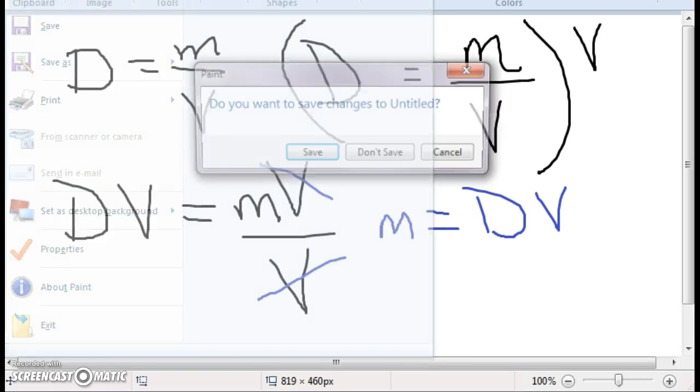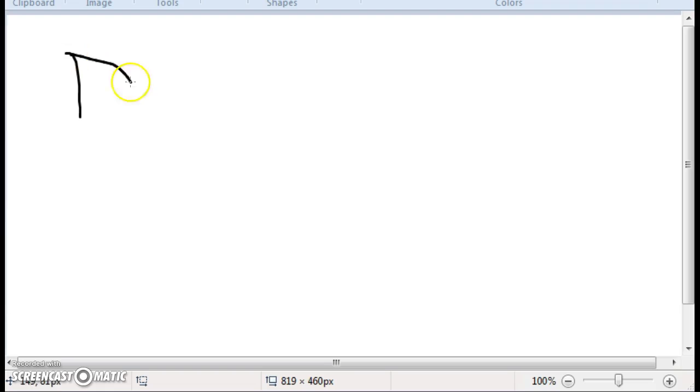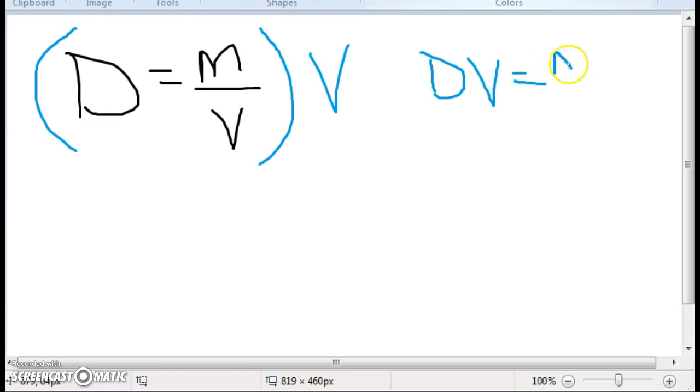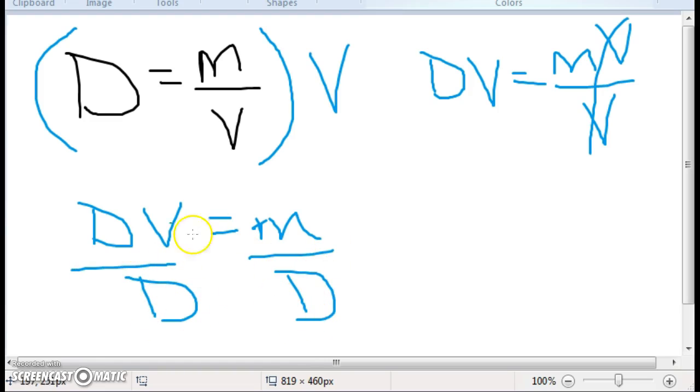Alright, so now, let's solve for volume. So we have d equals mass over volume. And this time, I want to solve for volume. Well, the first thing we're going to have to do is get volume out of the bottom of that fraction. So let's multiply everything times V again. And we get dV equals mV over V. And our V's cancel. So if you're thinking, yeah, we did that already. Good. Hopefully you remember how. And now, we want to solve for V. So what do we do next? We divide both sides by d. And these two d's cancel out. And we get the equation V equals mass over density.